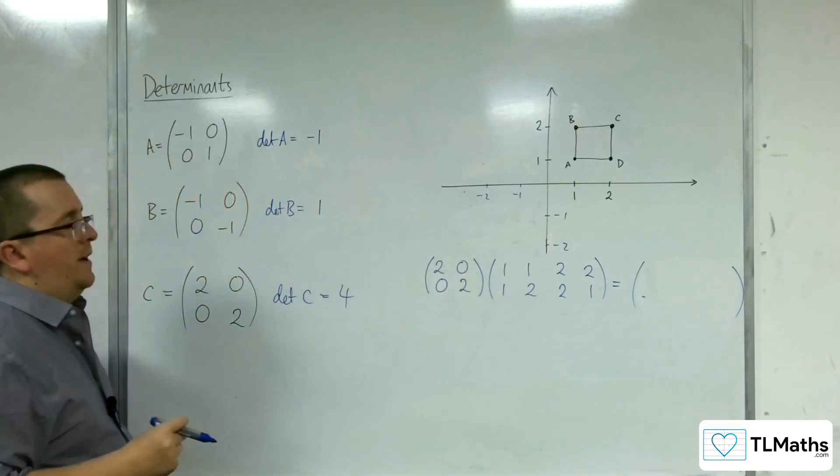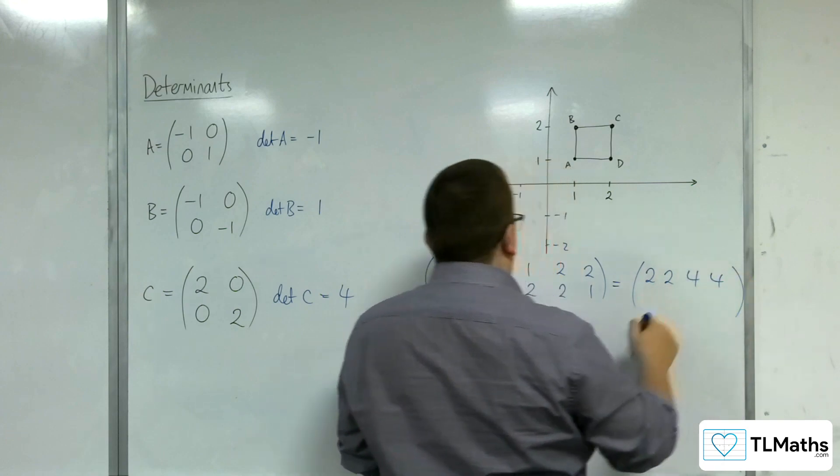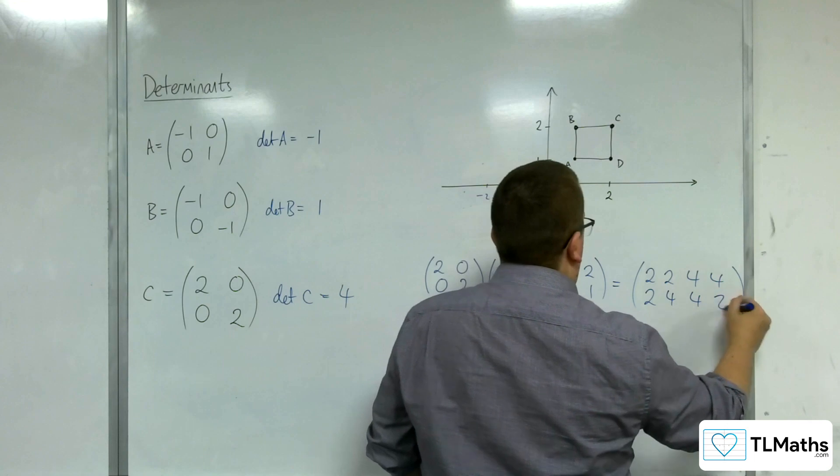So if we apply this matrix, we're going to get 2, 2, 4, 4, and (0, 2) multiplied by each of those, so 2, 4, 4, 2.